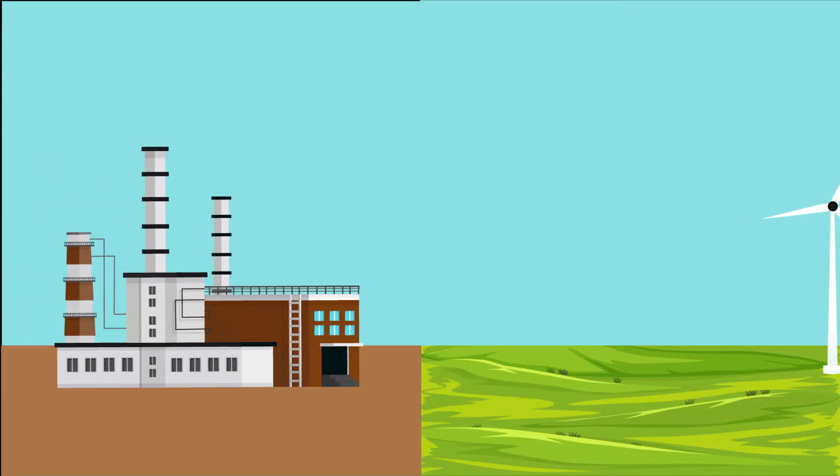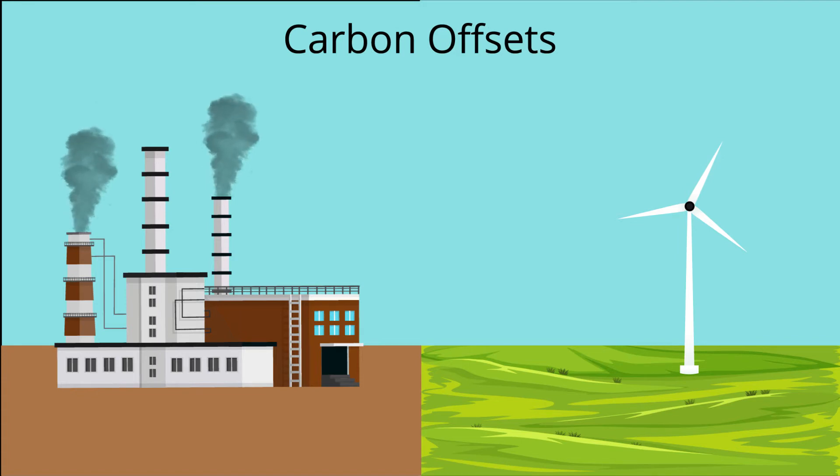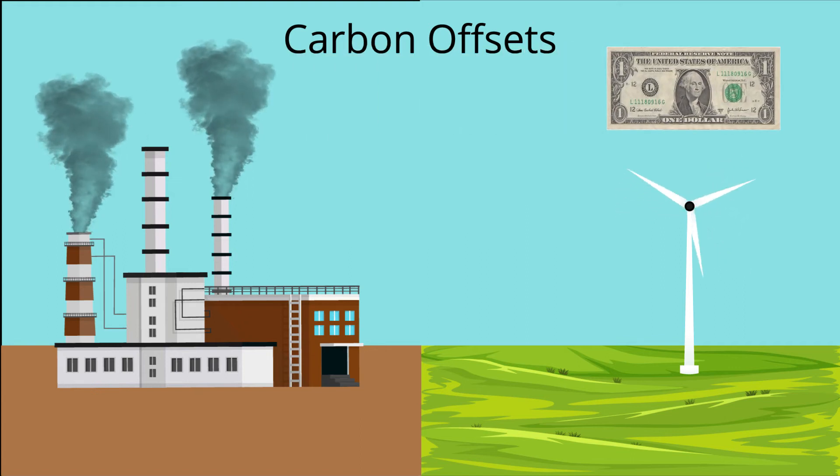Carbon offsets are actions meant to compensate for human activities that emit carbon into the air. Companies and even individuals can pay an organization that will then use the money for a project meant to either absorb carbon or reduce carbon emissions.